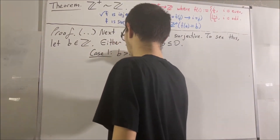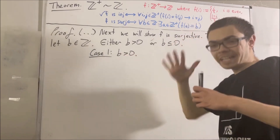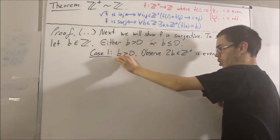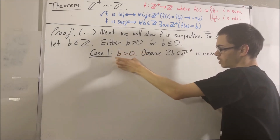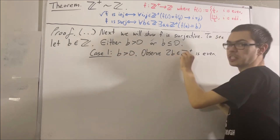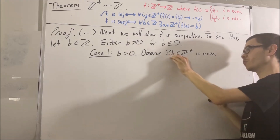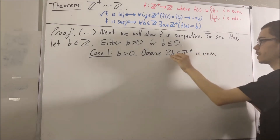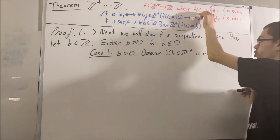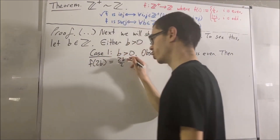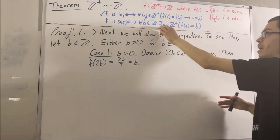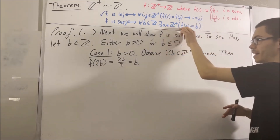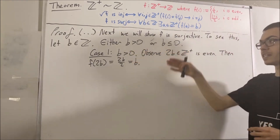Let's start with case one, where b is greater than zero. Observe that 2b is an even positive integer. Since b is an integer, 2b is an integer; since b is greater than zero, 2b is also greater than zero, so 2b is a positive integer. And 2b is even because 2b equals 2 times some integer. Now, if we send 2b into the function f, since 2b is even, f of 2b equals 2b over 2, which simplifies to b. So there is a positive integer a — namely 2b — such that f of a equals b. This completes case one.